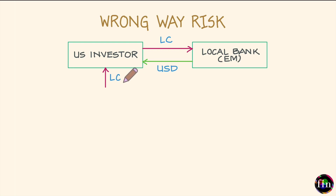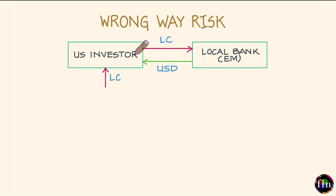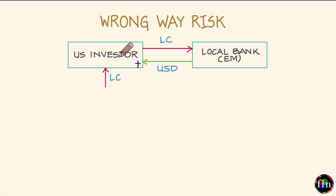Now think of a situation where the country which was the issuer of these bonds were to go under some sort of distress. If the country were to go under distress, there is a high chance that LC will be devalued. If LC were to lose value and become a weaker currency, what happens to the mark-to-market (MTM) value of this cross-currency swap? Because our US investor is paying LC — the weaker currency — and receiving USD — the now stronger currency — the MTM value of this cross-currency swap from the investor's perspective becomes positive.